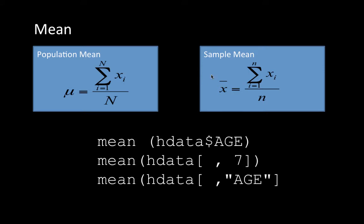The sample mean is calculated in exactly the same way: sigma i equals 1 to small n, Xi divided by small n. Notice that we represent the sample mean by X-bar, not mu. This is the statistic and mu is the parameter.